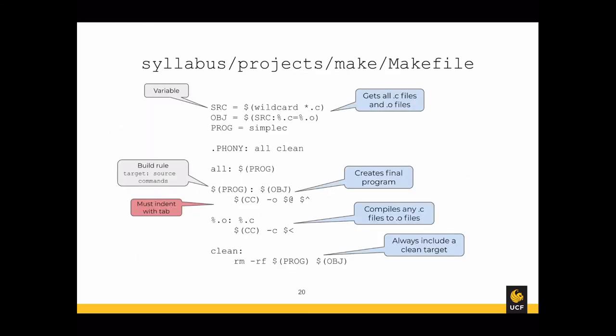Let's look at an example Make file you can use for your project. At the top we have variables: SRC and OBJ. The wildcard *.c automatically fills in whatever .c files you have in your directory, and OBJ replaces the .c extension with .o. PROG is the name of the final program. It's also mandatory to name your output simple C so that we can automatically grade it.